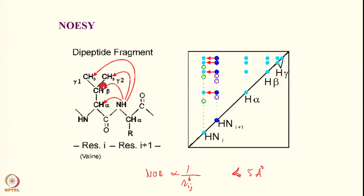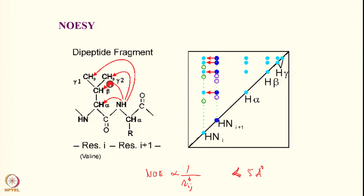Calculating the distances, they depend upon the dihedral angles phi and psi of the Ramachandran plot, which are responsible for variations in conformation of peptides. These distances can range from 3.5 to 5 angstroms. You will always see these peaks, but with more or less intensity depending on whether it is an alpha or beta type of structure. The intensity variations are extremely useful for structure calculations.